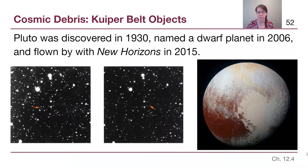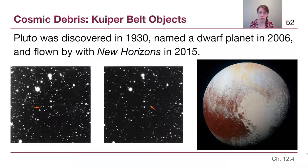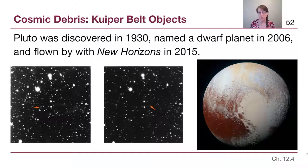Follow-up observations showed this was indeed an object moving against the background stars, and as it was tracked more and more, the orbit showed it was orbiting the Sun. It was named a dwarf planet in 2006, and at that point we really didn't know that much about it.